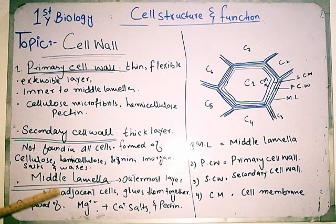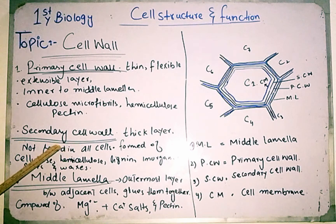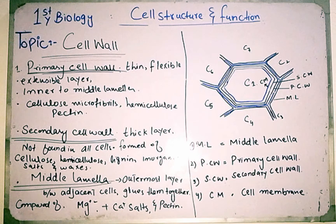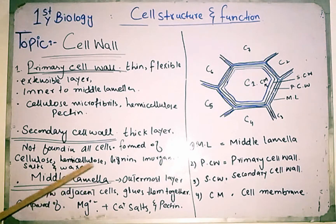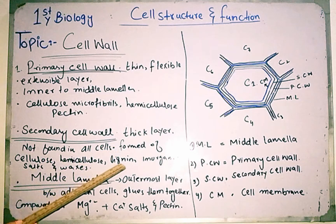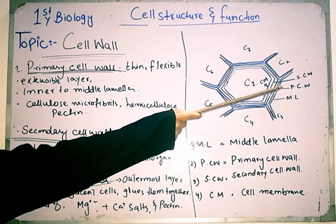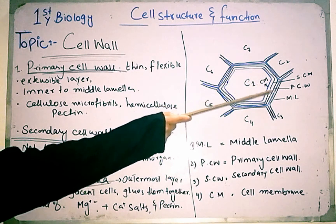After the primary cell wall, there is another layer called the secondary cell wall. The secondary cell wall is a thick layer and is not found in all cells. It is usually found in sclerenchyma cells and those cells which have reached their full growth, because the primary cell wall becomes tough and rigid and does not allow further growth. The secondary cell wall is made up of cellulose, hemicellulose, lignin, inorganic salts, and waxes. It is positioned between the cell membrane and the primary cell wall.